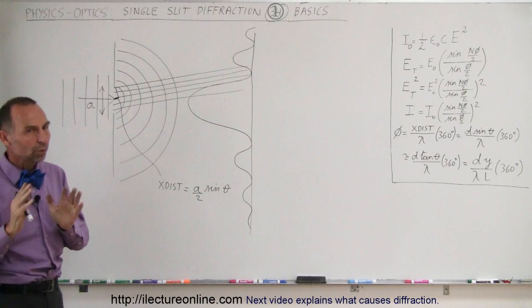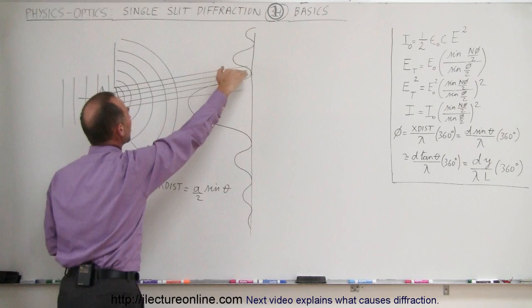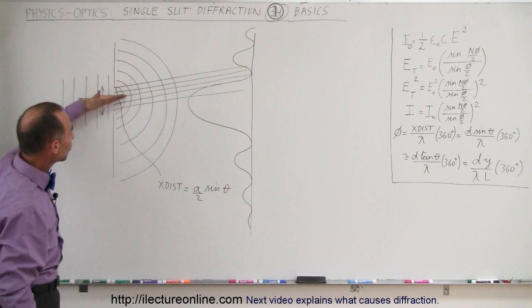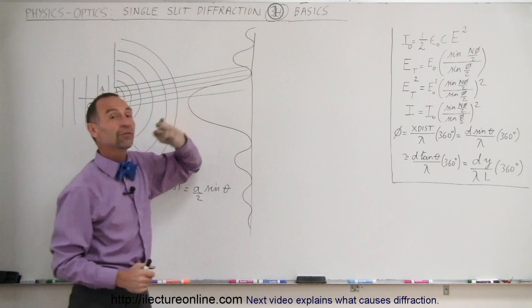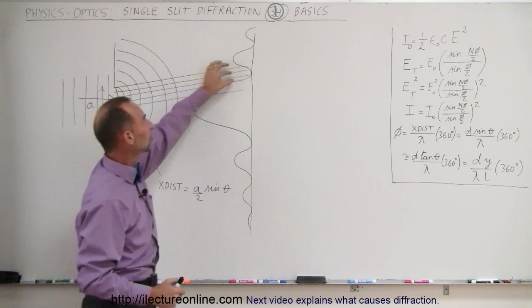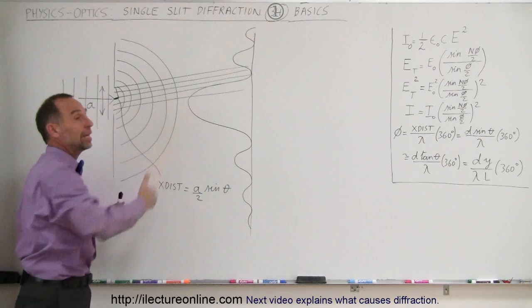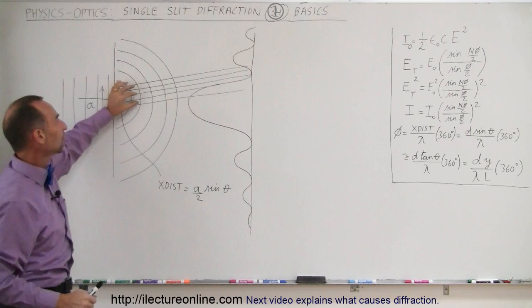If we take a specific spot on the screen and look at different portions of the beam traveling toward that spot, the portions at the bottom have to travel a greater distance than the portions at the top. For example, if the ray at the center of the beam has to travel exactly a half-wavelength farther than the ray at the very beginning of the beam, then those two rays will cancel each other out — destructive interference. Taking the next pair, and the next pair, those will also cancel out, because pairs of portions of the beam are simply a half-wavelength out of phase. Half a wavelength out of phase means destructive interference — you see nothing there, giving you a minimum. Half the beam cancels out the other half, and the result is no light at all at that point.